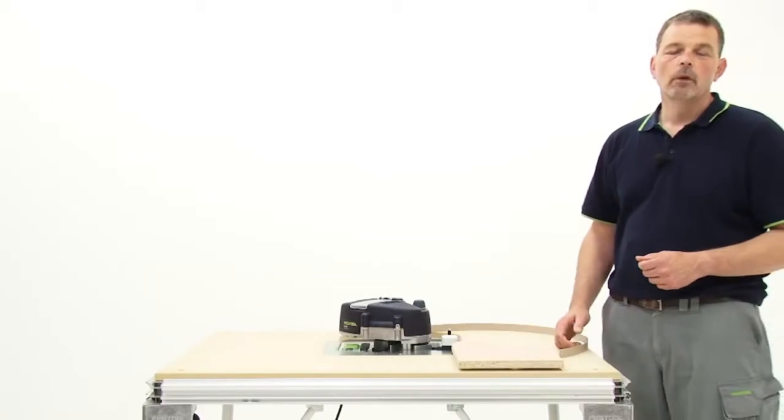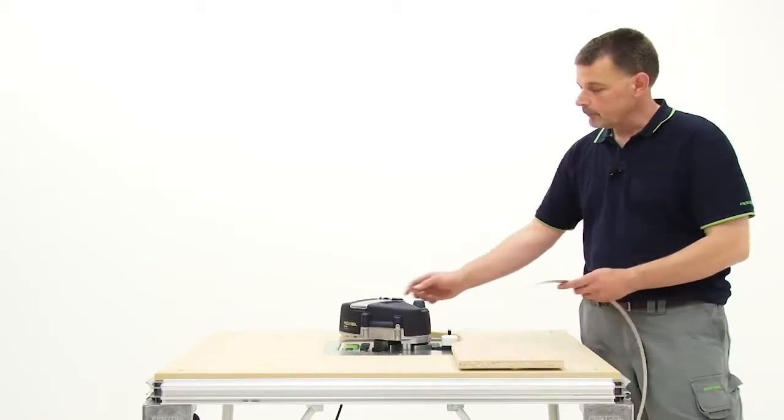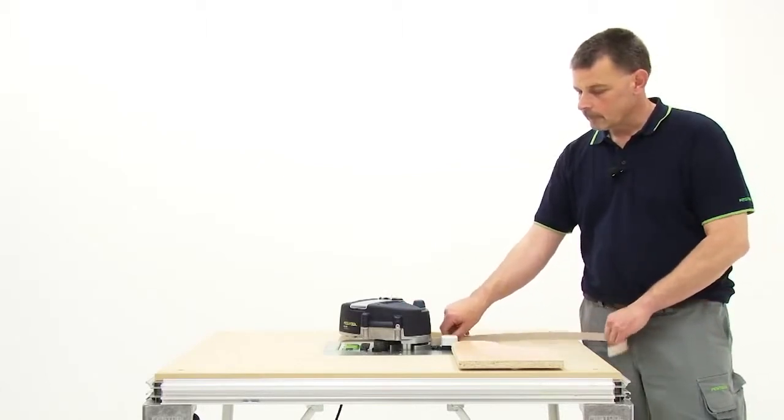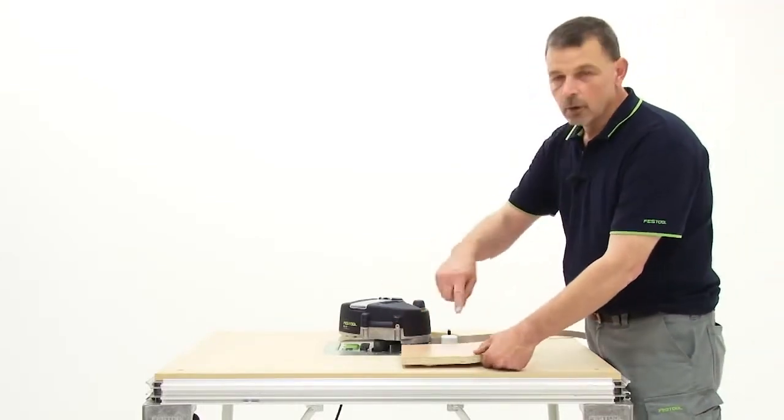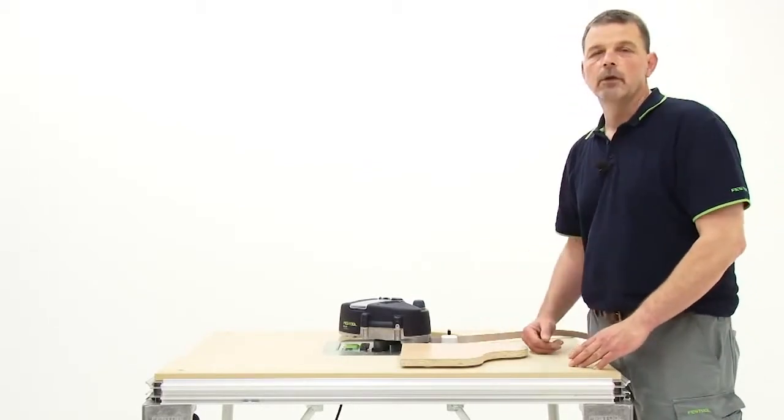So it's the same as we've seen before, we need to switch the machine on and feed the edging into it. Then we can position our work up against the roller and we can just feed it all the way through. The advantage of working like this is I can see exactly what I'm doing as well.